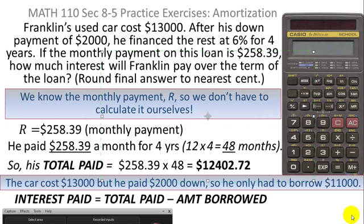So the bottom line here is, the interest paid is just the difference between how much he paid in to the bank or finance company minus the amount he borrowed. He didn't borrow $13,000 because he made a $2,000 down payment. So he really only borrowed $11,000. So the total interest paid is the amount he paid in altogether, which we've already calculated to be $12,402.72, minus what he actually borrowed, which was $11,000.